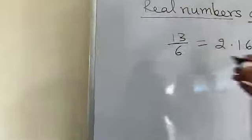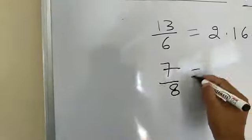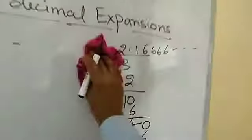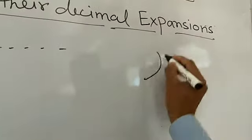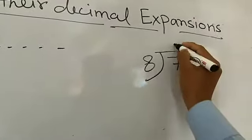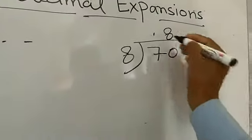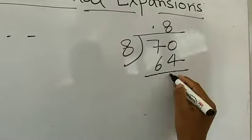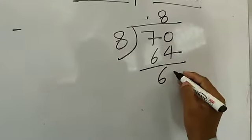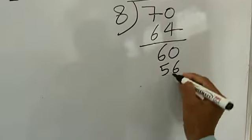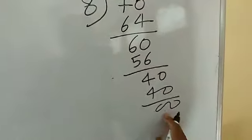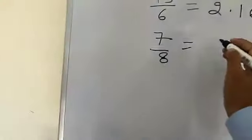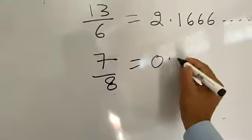Now I will take another example: 7 upon 8. Dividing 7 by 8 — put the decimal, 8 into 70 gives 8 (64), remainder 6; 8 into 60 gives 7 (56), remainder 4; 8 into 40 gives 5 (40), remainder 0. So 7 by 8 equals 0.875.